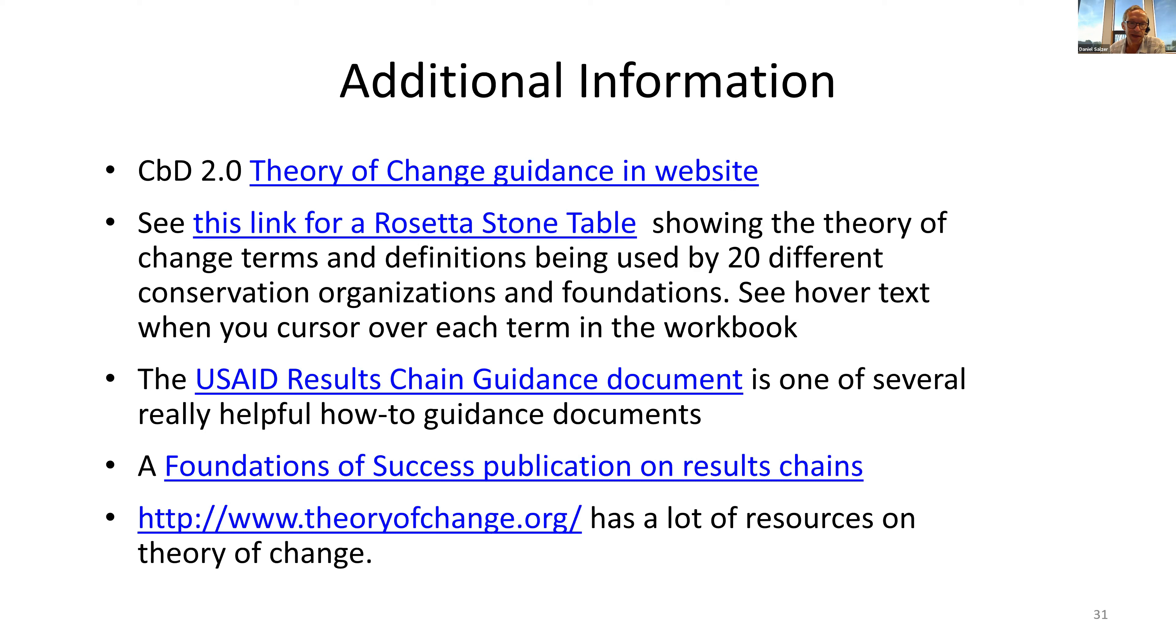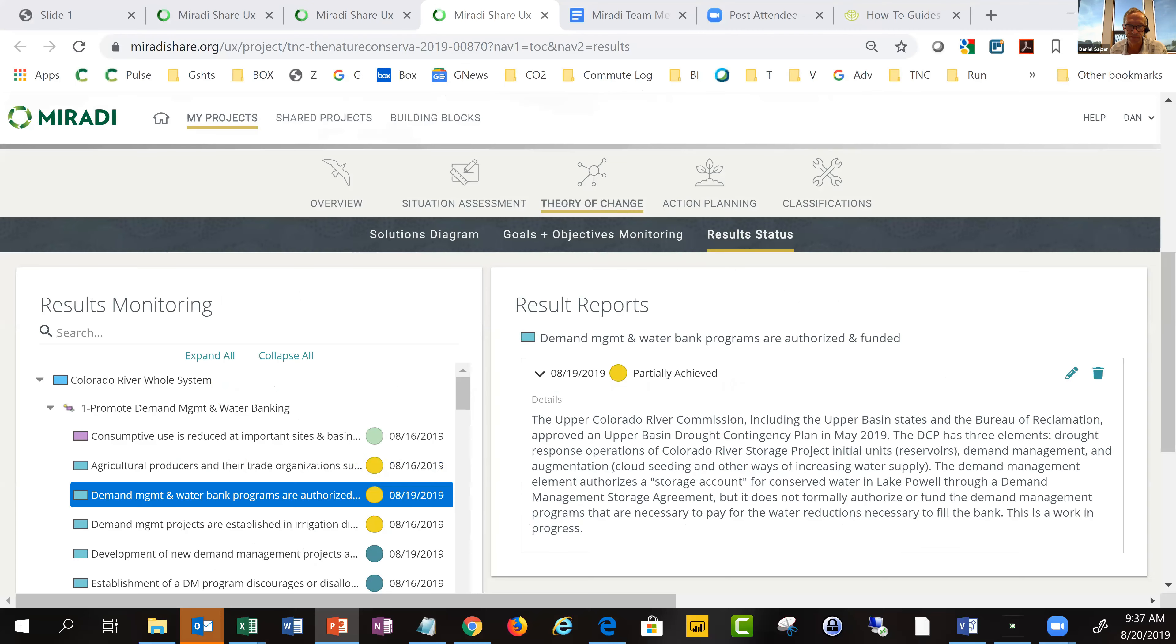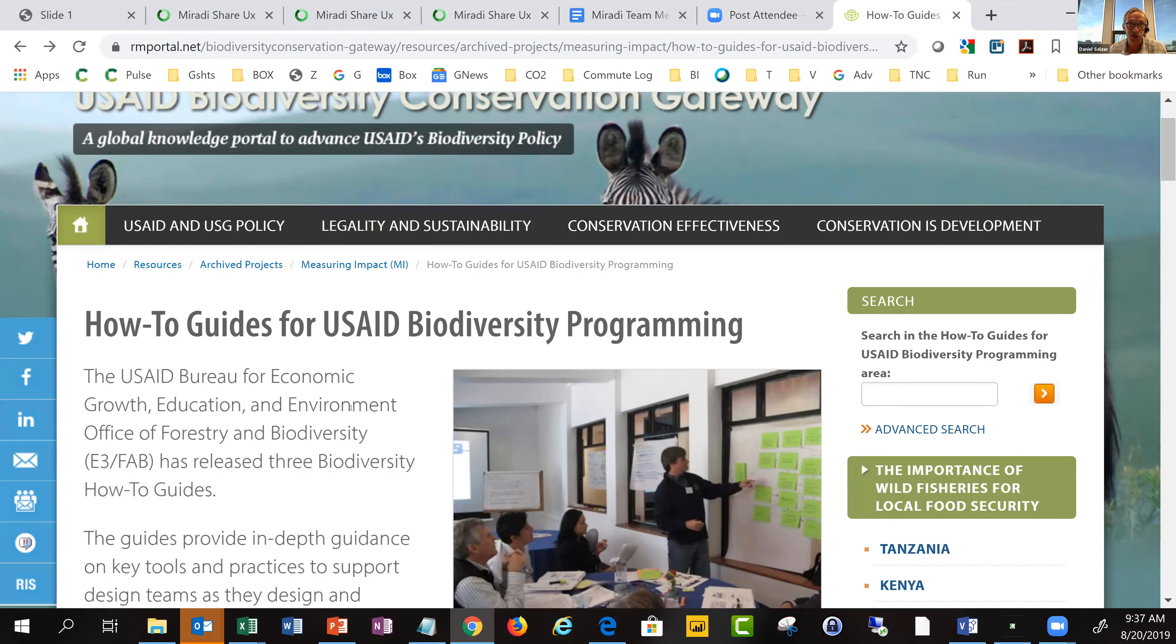There's a Rosetta Stone that shows different terminology because there's quite a bit of different ways these are described. You'll see different conservation organizations and foundations in there. You can use the hover text in the Excel workbook—it'll show you how some of these different terminologies and definitions exist. There's a really good set of USAID guidance documents, including a results chain one.